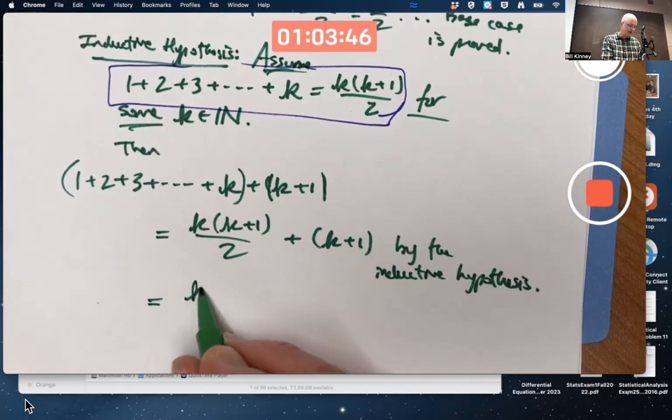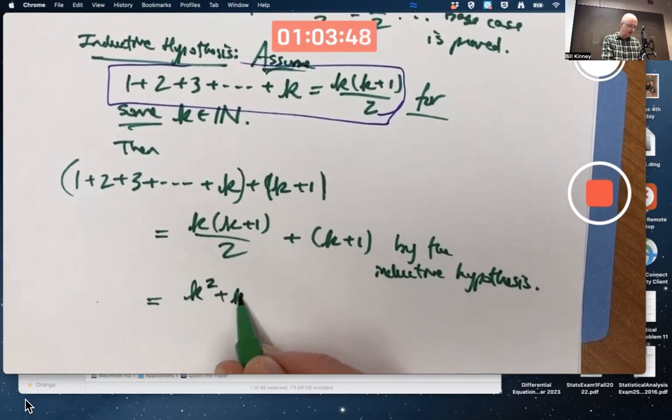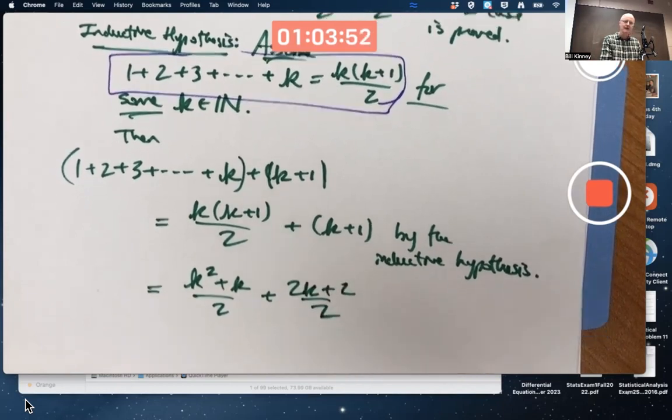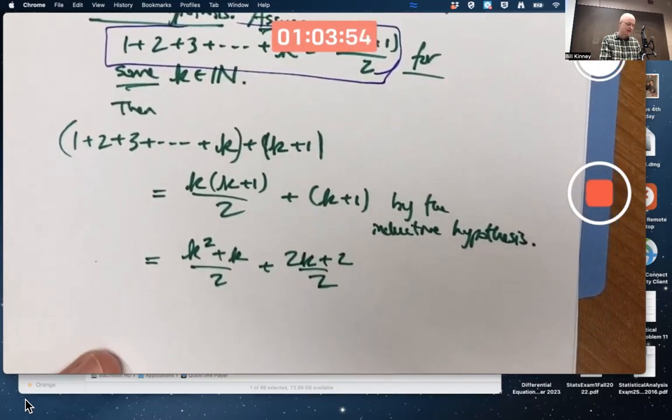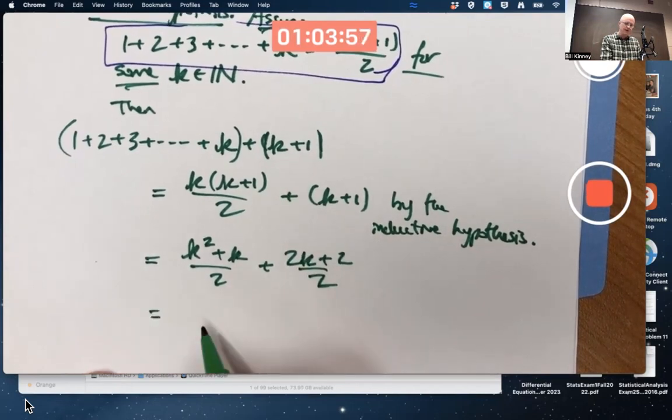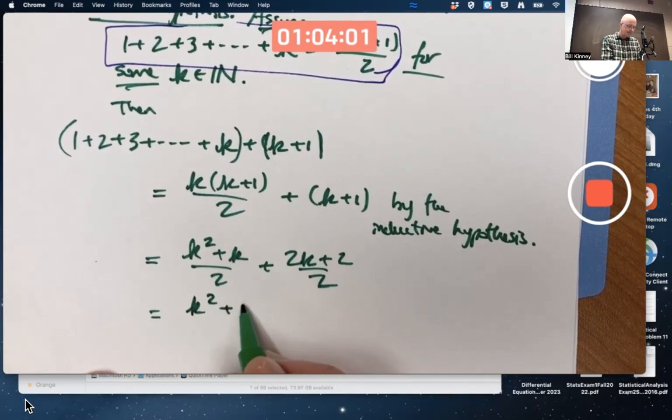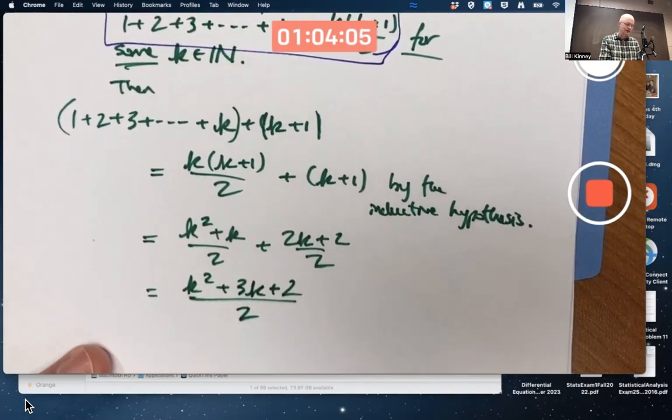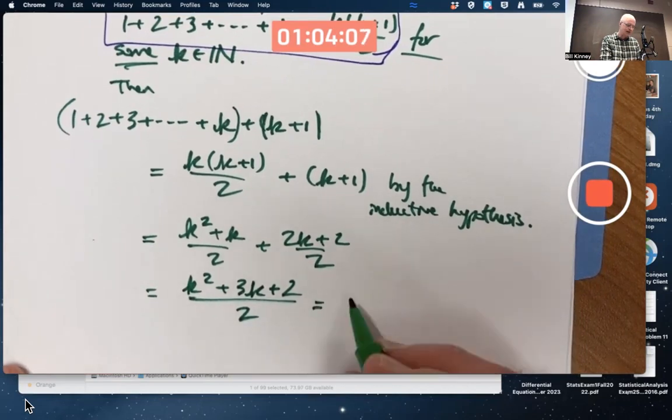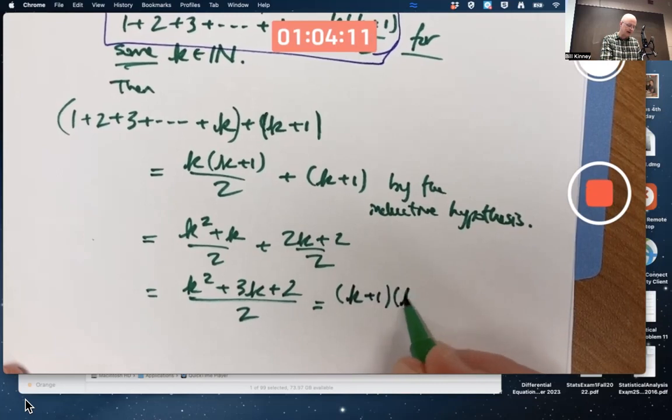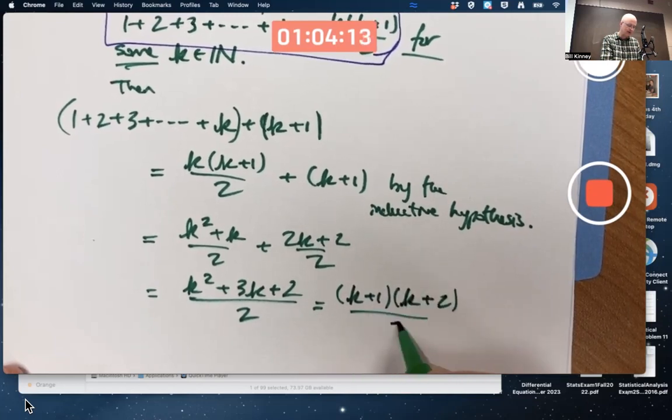Get a common denominator of 2, like this. I also expanded the top there. You've got a common denominator. You can add the fractions by adding their numerators. And then fortunately, it works out nice. You can factor this as k plus 1 times k plus 2, like I just said, all over 2.